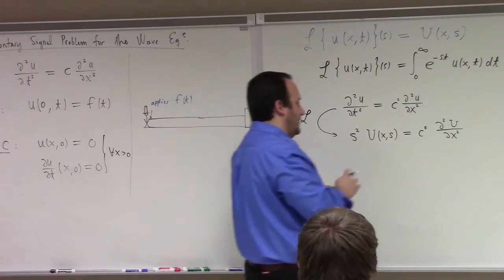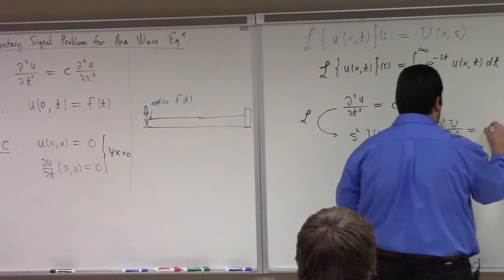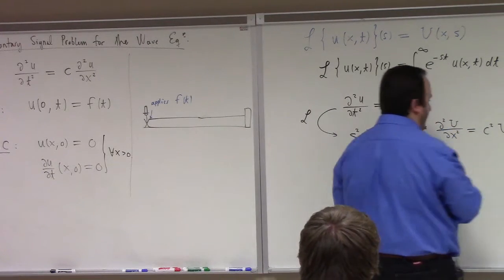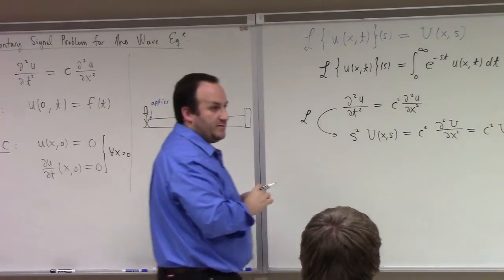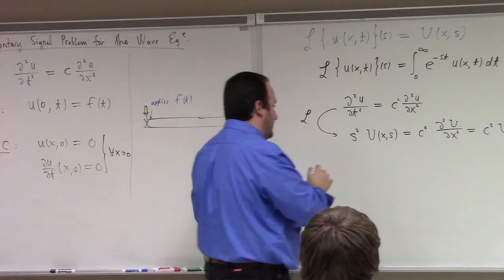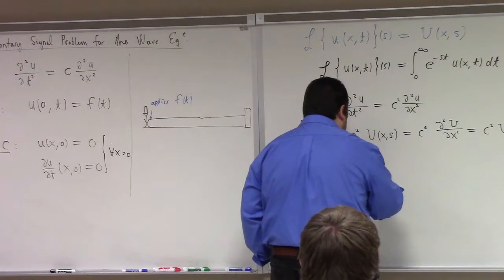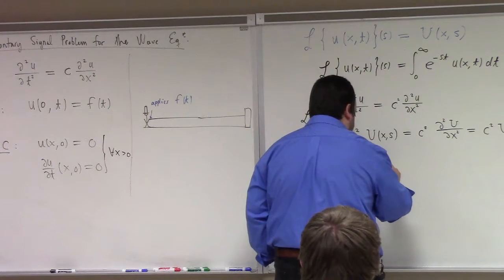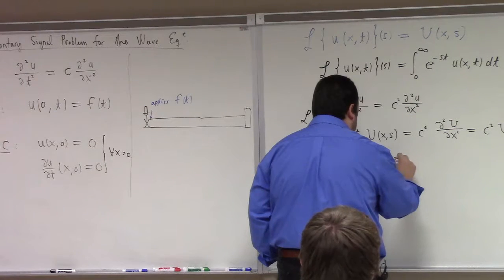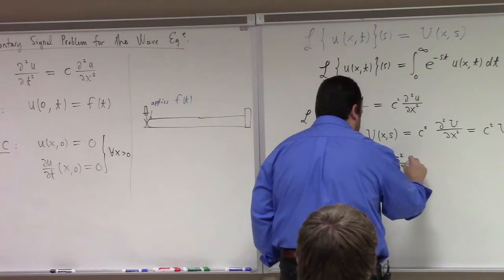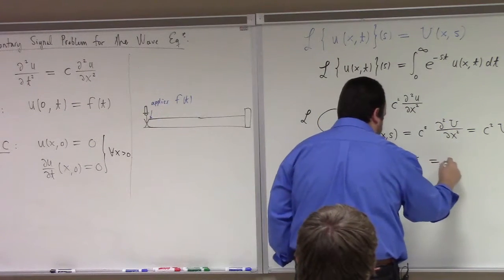We'll call this C squared U prime prime, with the understanding that's an x derivative. So what we've got is U prime prime minus S squared over C squared times U equals 0.